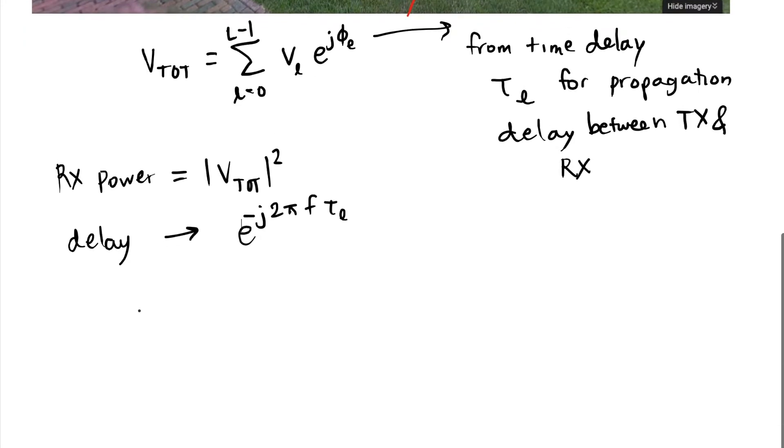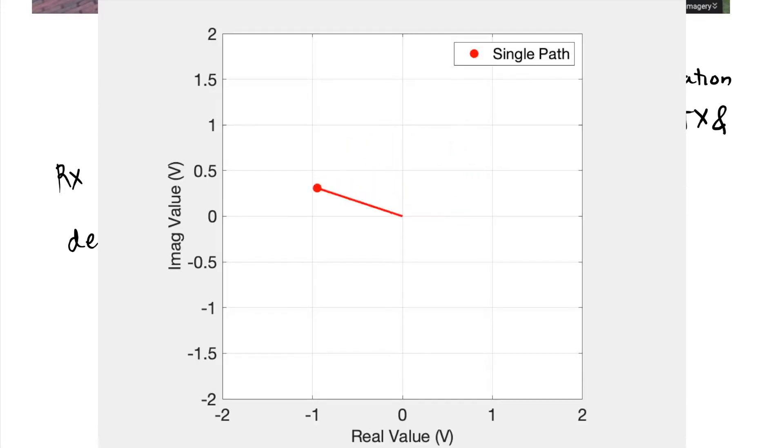Let's take the example of one path. As I move my antenna and have a single multi-path component in my channel, as that tau sub l gets longer or shorter it changes the phase of that path. It makes the phasor of v sub zero rotate around the origin, but it's always the same distance from the origin so the power stays constant.